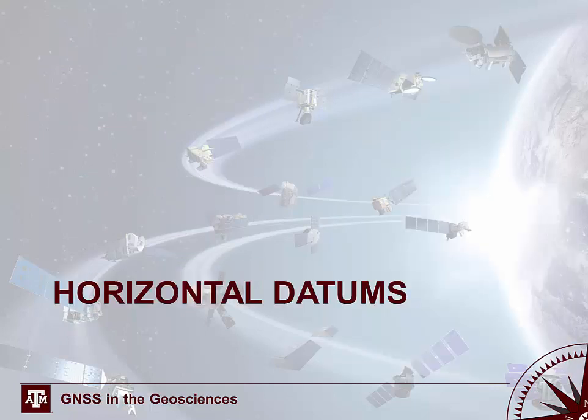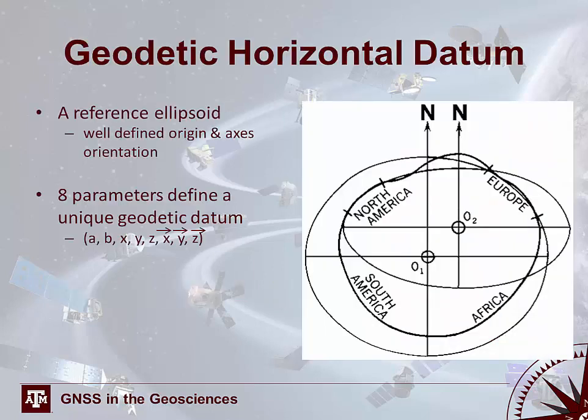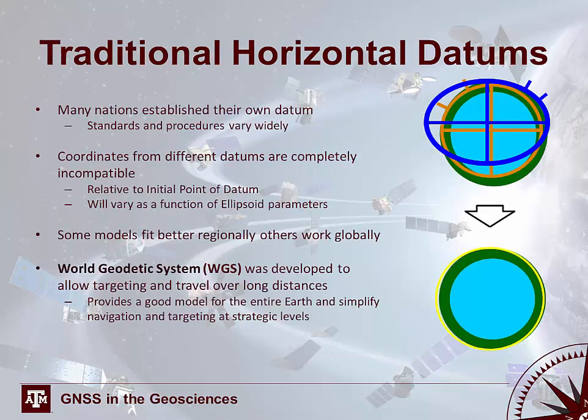The next topic we will cover is horizontal datums. A geodetic horizontal datum is essentially a referenced biaxial ellipsoid that has a well-defined origin and axis orientation. There are eight parameters that uniquely define a geodetic datum: a and b, which are your semi-major and semi-minor axes, as well as your x, y, and z coordinates and your x, y, and z vectors. There are a large number of horizontal datums, many of which are specific to different regions, nations, or even localities.